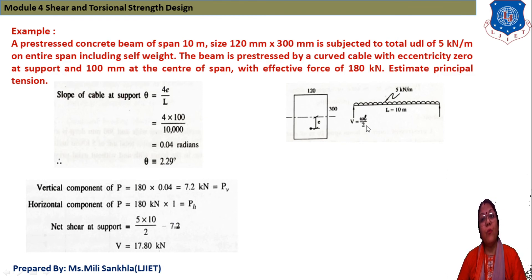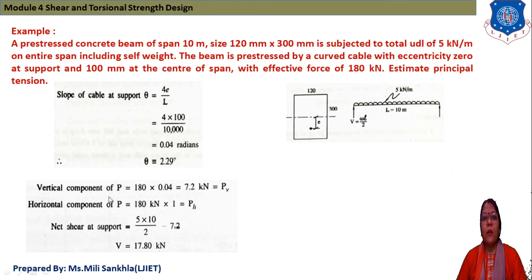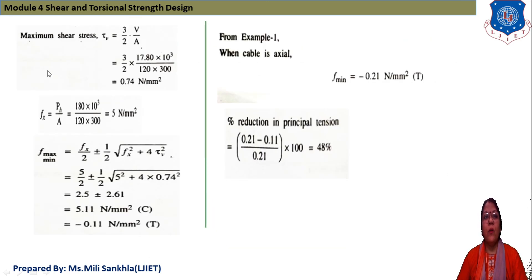The support reaction due to UDL is WL/2 = 5 × 10/2 = 25 kN. The vertical component of prestress (7.2 kN) acts downward and opposes the UDL reaction upward, so the net shear force = 25 − 7.2 = 17.8 kN. Two vertical forces are acting: UDL reaction upward and vertical prestress component downward.